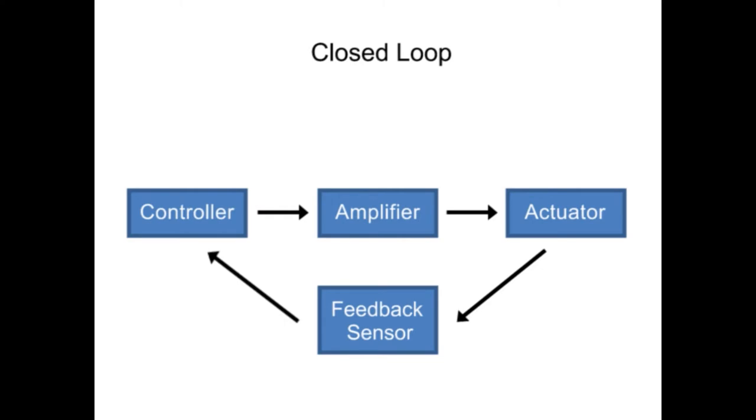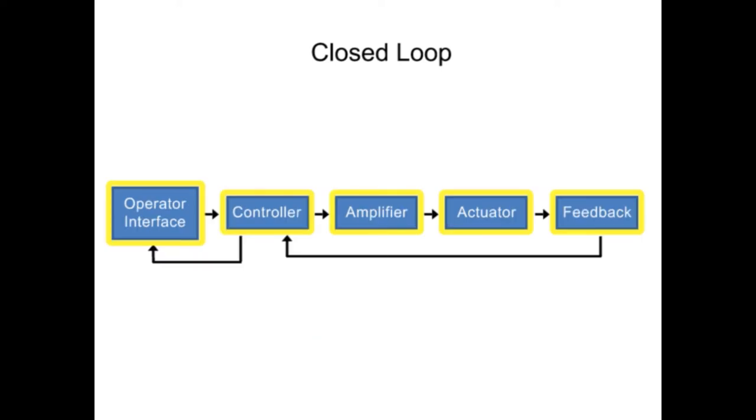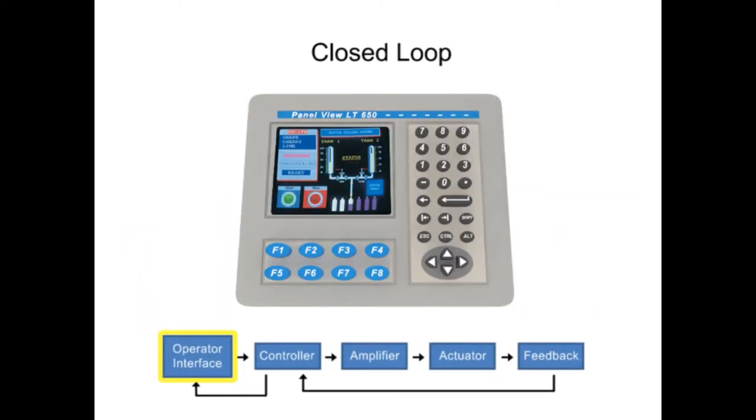A closed-loop motion control system is comprised of the following elements. The operator interface allows the user to command signals to the controller. Examples of an interface are industrial computers or an operator interface terminal.